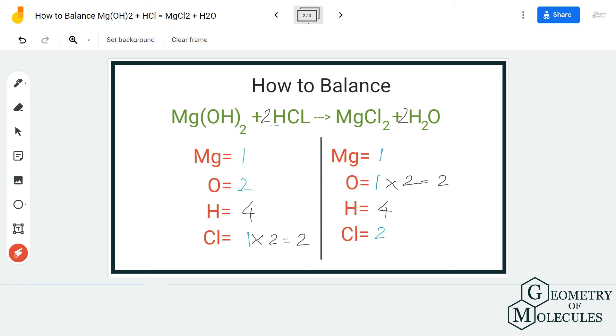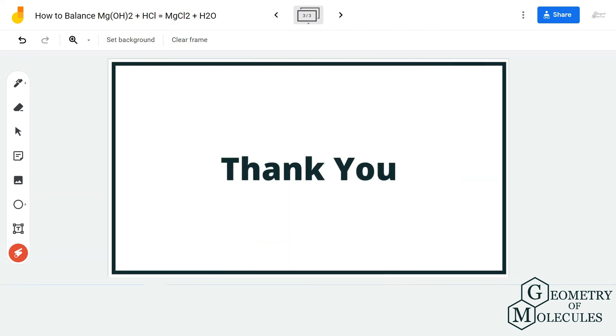Now placing these two coefficients helped us balance this equation and it was only possible because we knew the number of atoms on both reactant and product side. I hope this video helps you to understand how you can balance any chemical equation. For more such videos on Lewis structure, molecular geometry, balancing chemical equations, make sure to subscribe to our channel and thank you for watching.